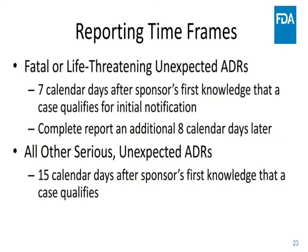What are the reporting time frames? For a fatal or life-threatening unexpected ADR, it's seven calendar days after the sponsor's first knowledge that a case qualifies for initial notification, and then a complete report an additional eight days later. This is the tightest time frame — seven calendar days for a fatal or life-threatening unexpected ADR. All other serious unexpected ADRs: 15 calendar days after the sponsor's first knowledge that a case qualifies.